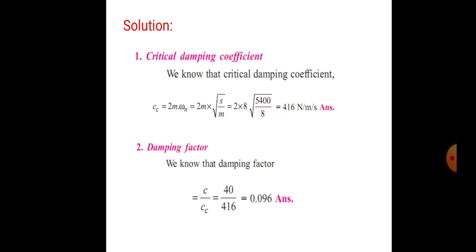The critical damping coefficient cc is equal to 2m·ωn, or you can write 2m times the square root of k/m. Putting in all the values, we get cc = 416 Newton·meter per second. Now the damping factor: c/cc = 40/416 = 0.096. So the damping factor is 0.096.